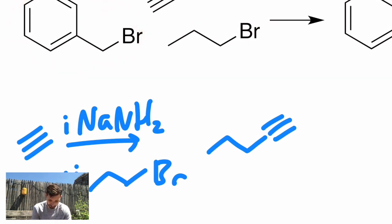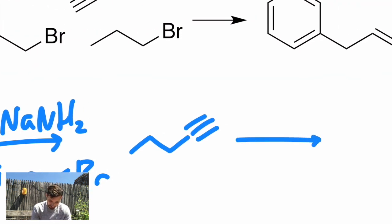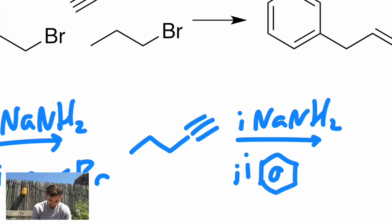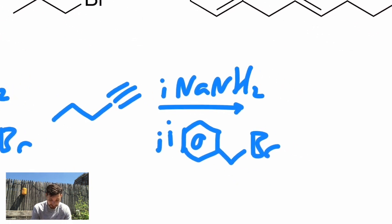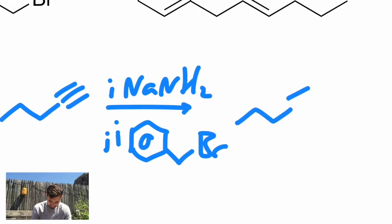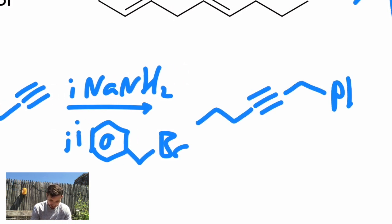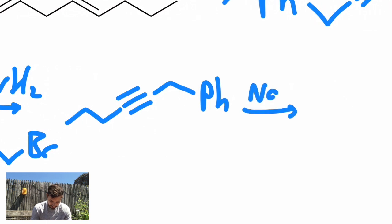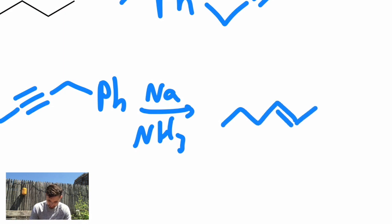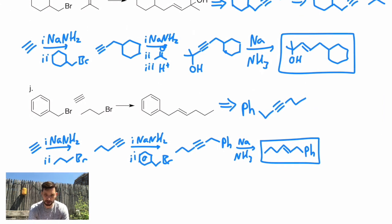Then NaNH2. This is called benzyl bromide. Benzyl means phenyl with one extra carbon as opposed to just phenyl. And then we need to do a trans reduction. Na and NH3. And I think that's our product. So those are by far the biggest molecules we've made so far in Orgo 1. Congratulations. I hope you did a good job. There's plenty more practice for you to try. Good luck!